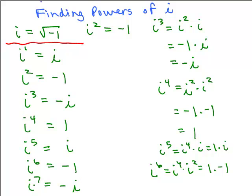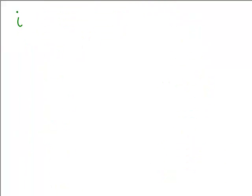i to the 7th is really i to the 4th times i cubed — that's 1 times negative i, so you're back to negative i. The key idea is that i to the 4th is 1. That's a very important one to remember. Now let's look at a higher power.